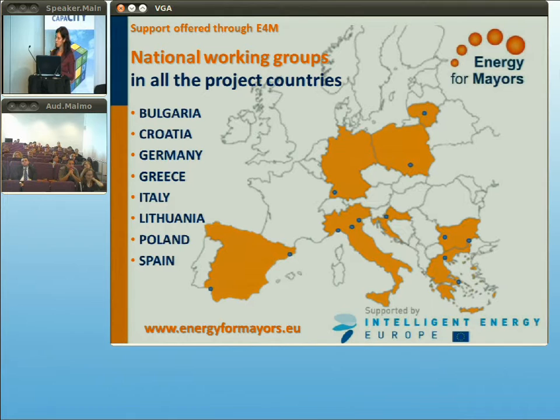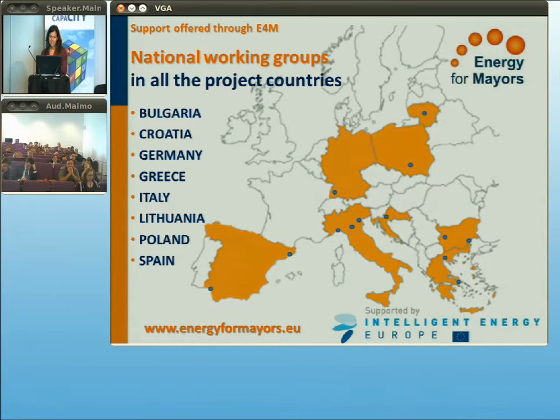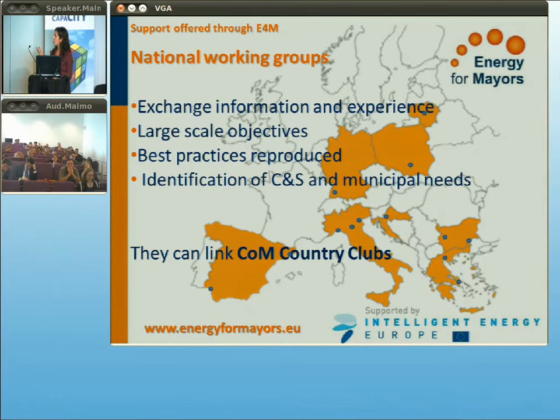These are the project countries — the dots are the partners. In these countries there are national working groups working. If you are from one of these countries, you will find it easier to join the project. But there are also many organizations like Covenant Clubs around. You can join the national working group and exchange information and experience, find best practices locally, and reach large-scale objectives. Joint steps can be made because you can see and gather together the needs of Covenant coordinators, supporters and municipalities in your country, as well as training.